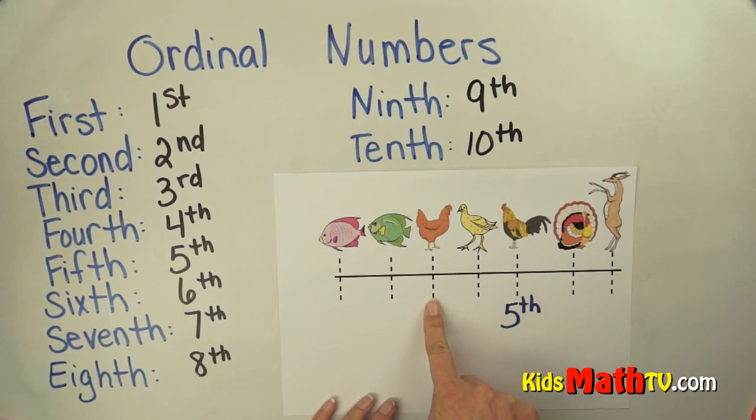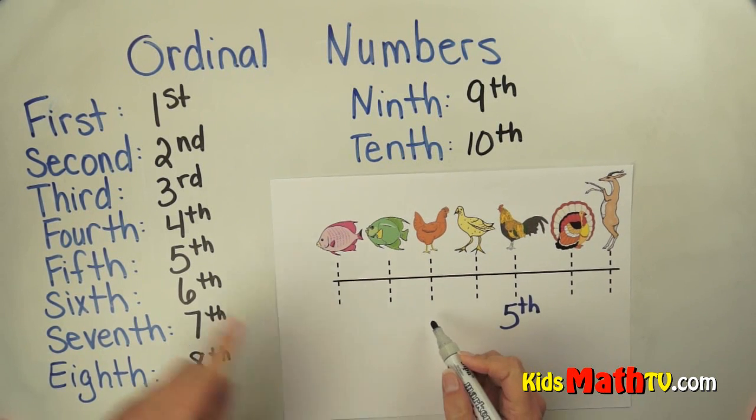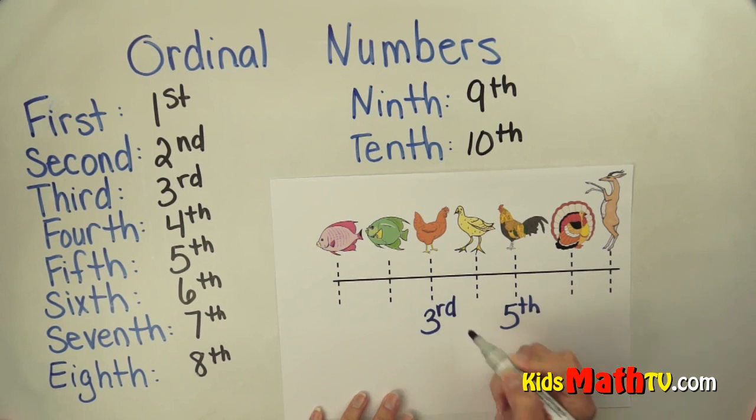What about this chicken? It's a different chicken facing a different way. This chicken is in a different place. It is in the 1st, 2nd, 3rd place.